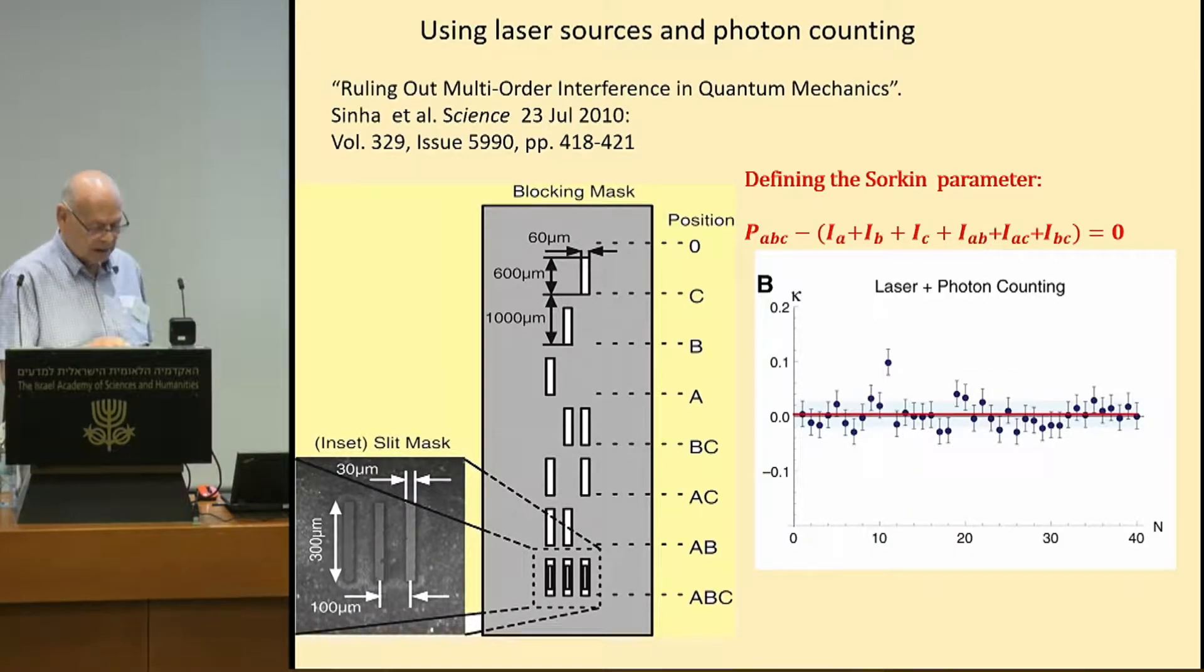So that immediately brings us to a possible experimental situation. Let us make an experiment which contains a single slit, double slit, and triple slit, and see if indeed the results of a triple slit experiment is composed of the components of two slits and a single slit, as this expression says.